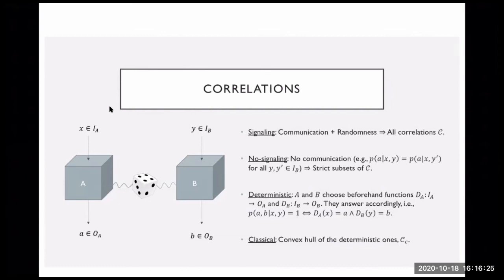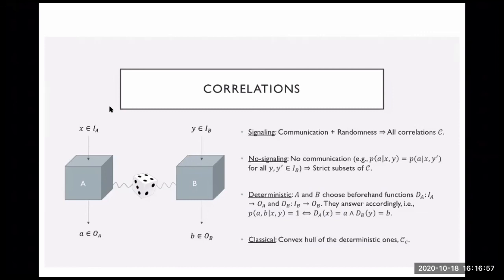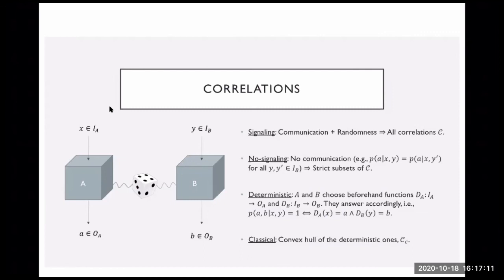The classical correlations are the convex hull of the deterministic ones. If you model your world without quantum mechanics and believe the world is only classical, there is no correlation without information. The only way they can correlate better is if they share some information before getting their questions, so they can only use randomness. Together, these give the convex hull of the deterministic approach — the maximum they can get, correlation-wise, if they can share randomness beforehand.